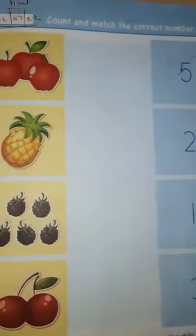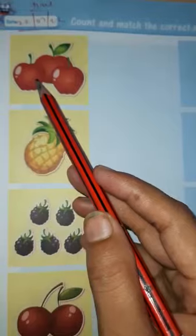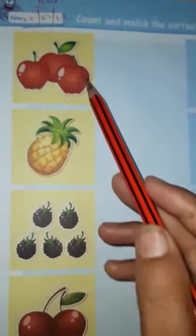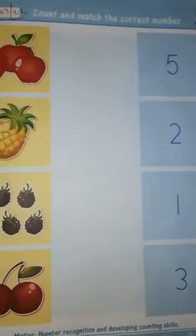Count and match the correct number. Look here, you have to count these pictures. There are three apples, one, two, three, and you have to match it with the correct number. Now look here.